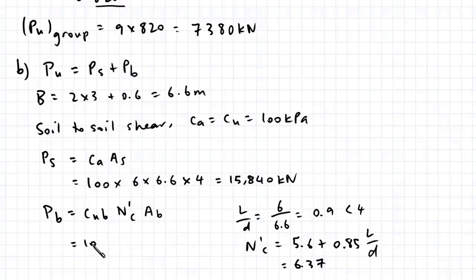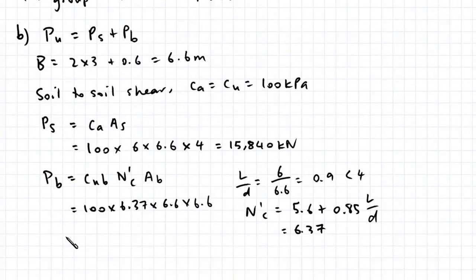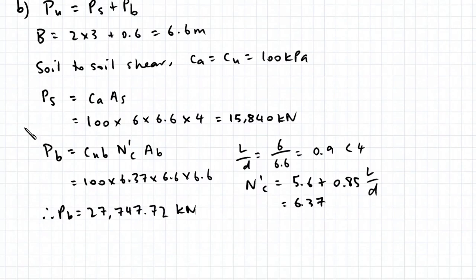Going back to Pb, that's 100 multiplied by 6.37 multiplied by the area of the base, 6.6 times 6.6. Therefore Pb equals 27,747.72 kN. The ultimate capacity of the block equals Ps plus Pb, which works out to 43,587 kN.